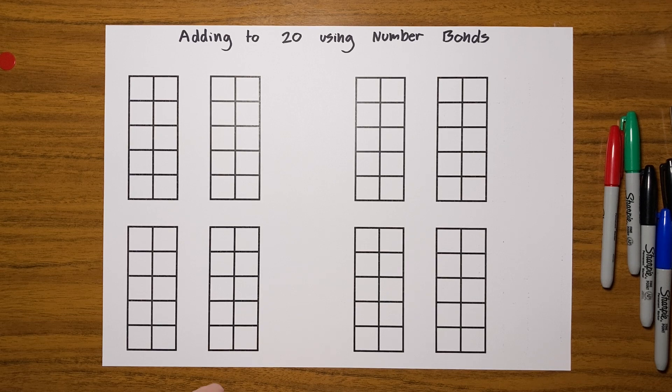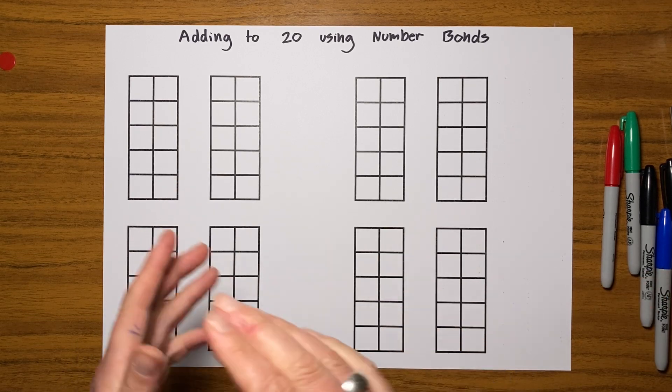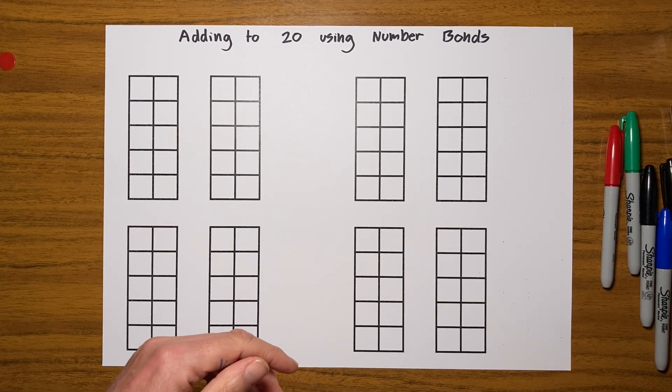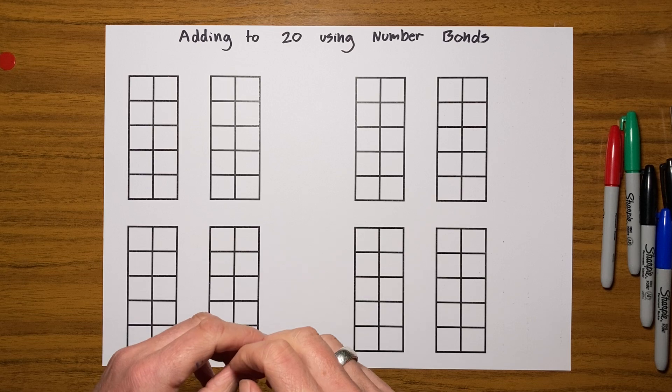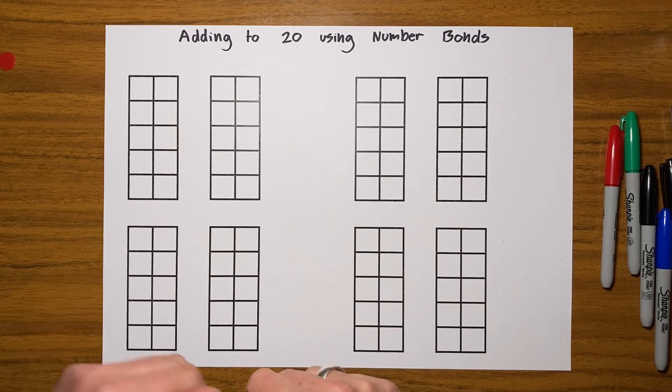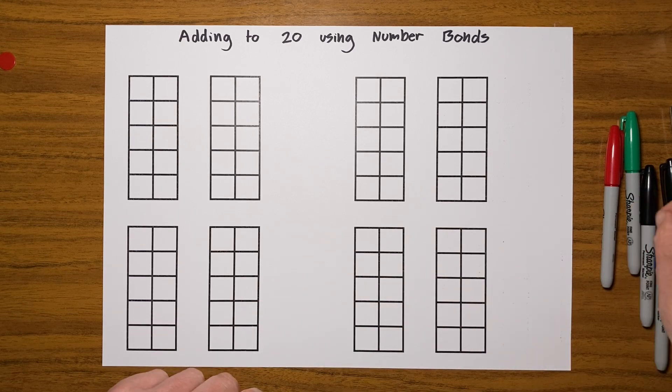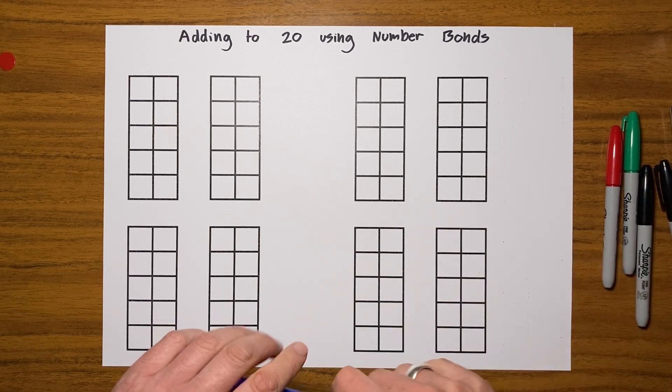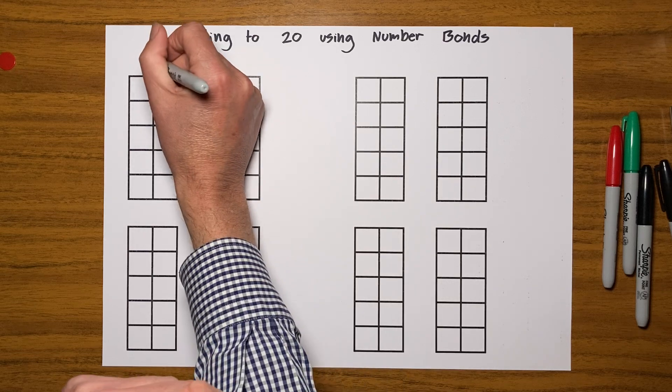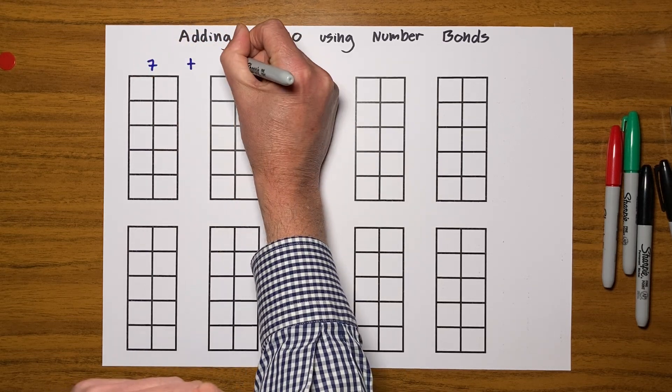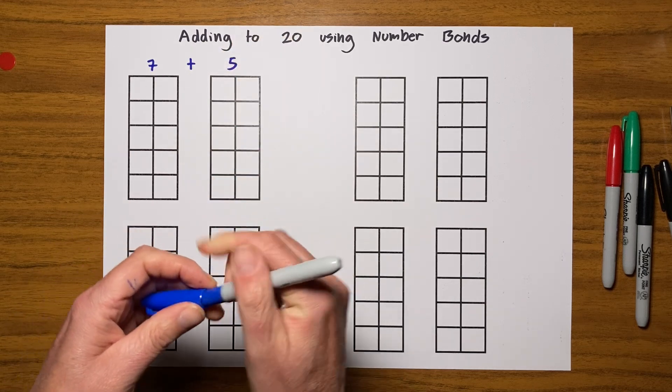So let's have a look at how these grids, these sets of 10, are going to help you. In all of these additions we're going to be coming up with a number that's larger than 10. For looking at how to add smaller numbers where the answer is less than 10, have a look at one of my other videos. So let's get cracking. Let's start off with adding, for example, let's go 7 and we're going to add 5.